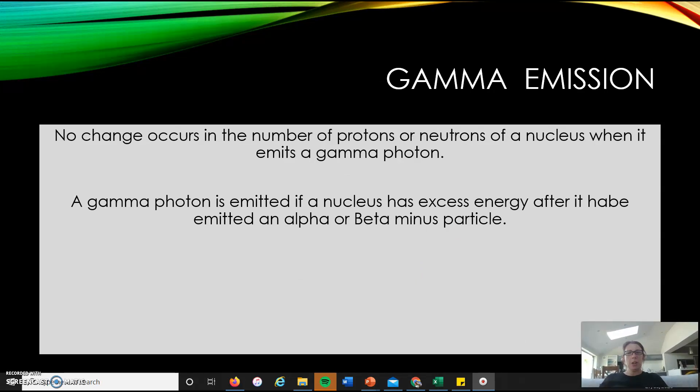You also have gamma emission. No change occurs in the number of protons and neutrons of the nucleus when it emits gamma, because a gamma photon is emitted if the nucleus has extra energy after it has emitted an alpha or beta particle.